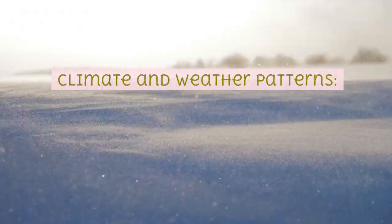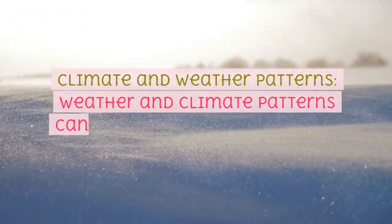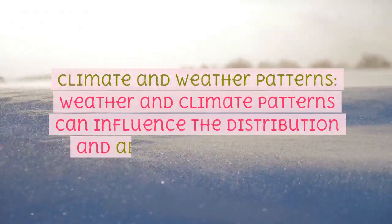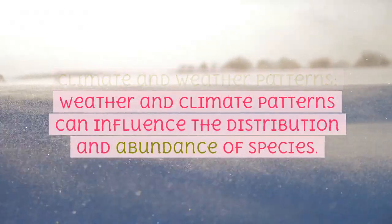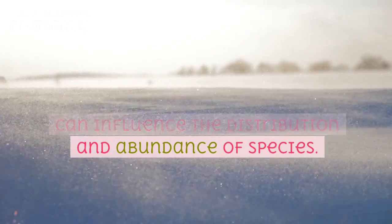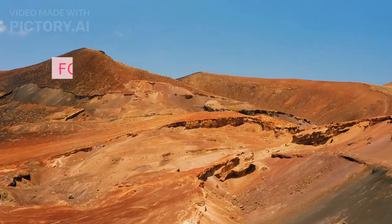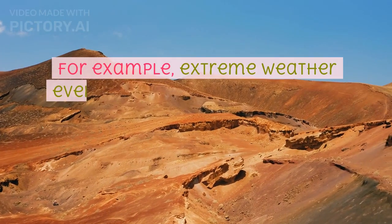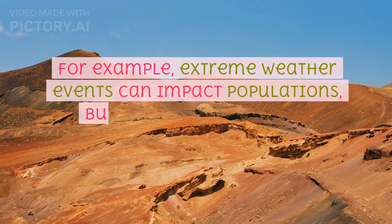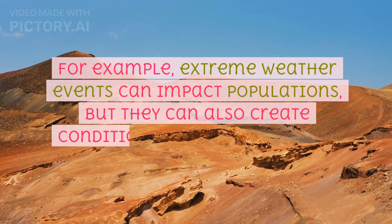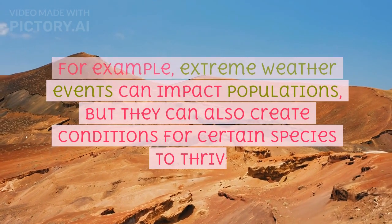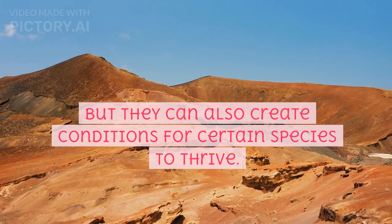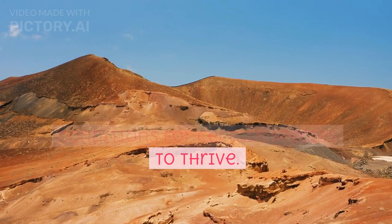Climate and weather patterns. Weather and climate patterns can influence the distribution and abundance of species. For example, extreme weather events can impact populations, but they can also create conditions for certain species to thrive.